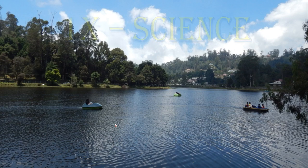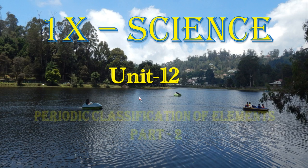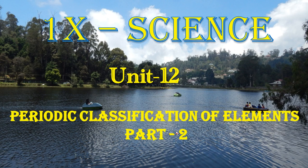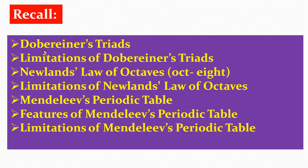Good morning students. Welcome back to 9th Science, Unit 12, Periodic Classification of Elements, Part 2. Now let's recall what we learned in the previous class: Döbereiner's triads and their limitations, Newlands' law of octaves and their limitations, Mendeleev's Periodic Table, its salient features and its limitations.